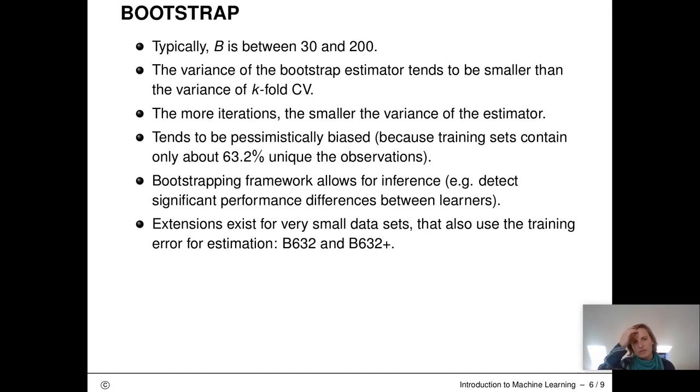Typically, B, so the number of iterations, is between 30 and 200, depending on how much time or computing power we have. The variance of the bootstrap estimator tends to be smaller than the variance of k-fold cross-validation, as training sets are independently drawn and discontinuities are smoothed out. As we know that more iterations are in general better, as the variance of the estimator decreases with increasing B.